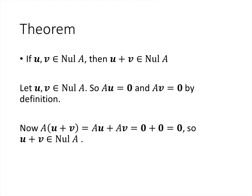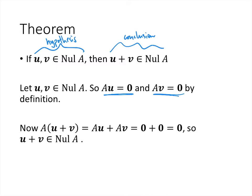Why is this set closed under vector addition? We have to prove that if two vectors u and v are in the null space, then u plus v is also in the null space. By definition, Au = 0 and Av = 0. Then A(u + v) = Au + Av = 0 + 0 = 0, which is exactly what we wanted.